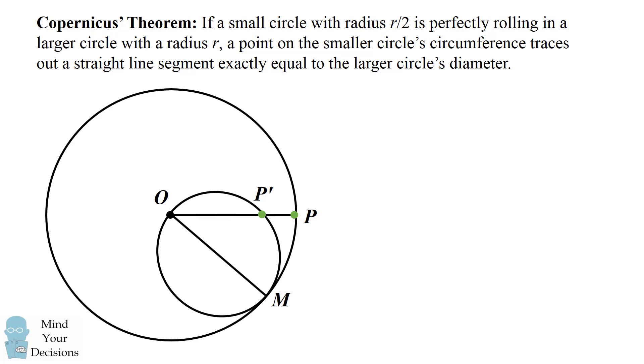So here are the steps to doing that. So the first part is that because point P moves to P', the arcs MP and MP' have the same length.